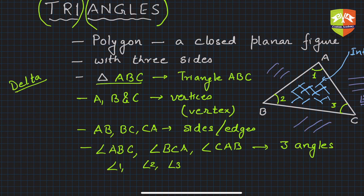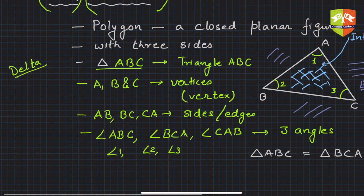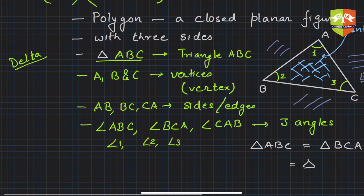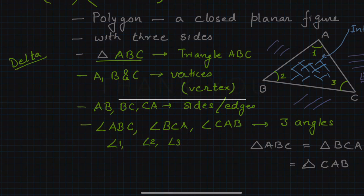It is denoted by a delta symbol followed by three letters A, B, C. There is no need to follow one particular order in naming. Triangle ABC is the same as triangle BCA. You can name the triangle in any order - ACB, ABC, in any order you can name it.